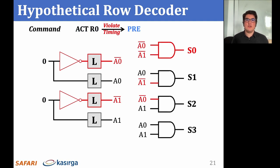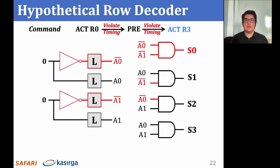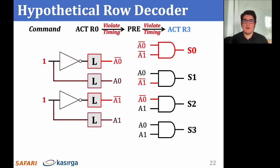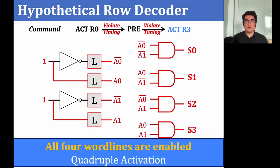Following the first activate command, we send a precharge command while greatly violating the TRAS parameter. The precharge command cannot disable the latches as there is not enough time due to the violated TRAS. We then quickly send another activate command, greatly violating the TRP parameter, this time to row 3. This interrupts the precharge process and the latches that drive A0 bar and A1 bar remain enabled. Then the least significant two bits of the address are set to 1, which enables the latches that drive A0 and A1. Since all intermediate signals are driven, all bitwise AND combinations of these signals are also enabled. With the execution of the second activate command, the remaining three wordlines S1 through S3 are enabled, resulting in quadruple activation as all four wordlines become enabled.